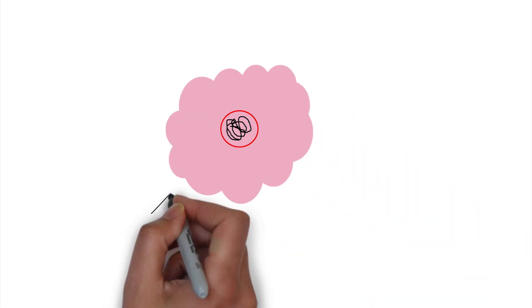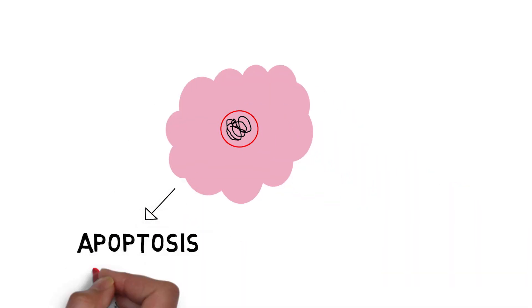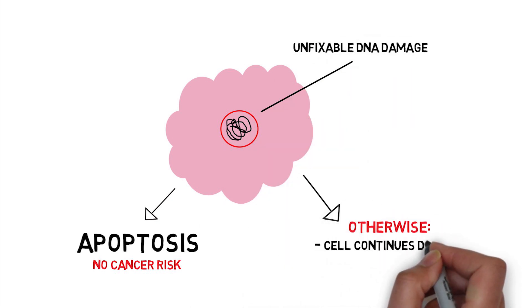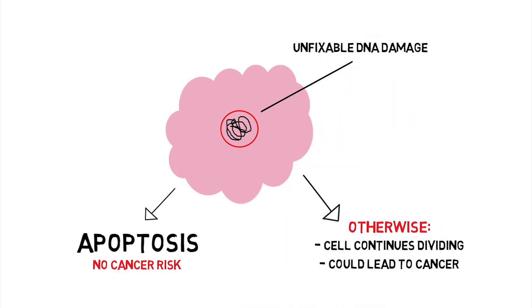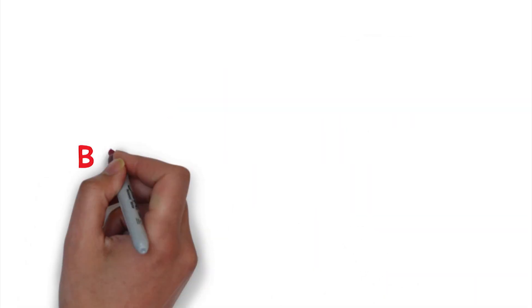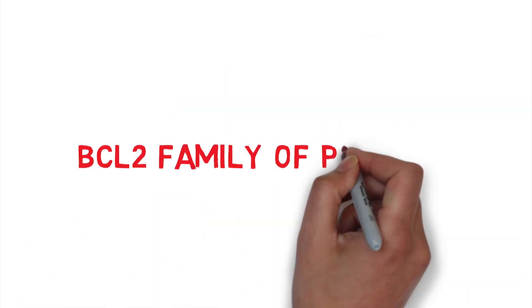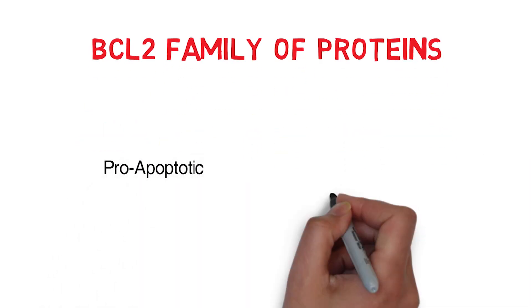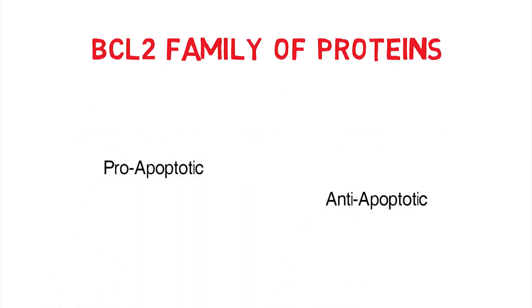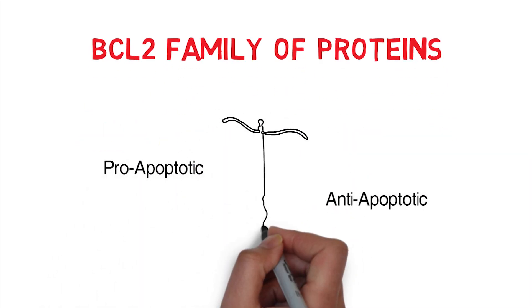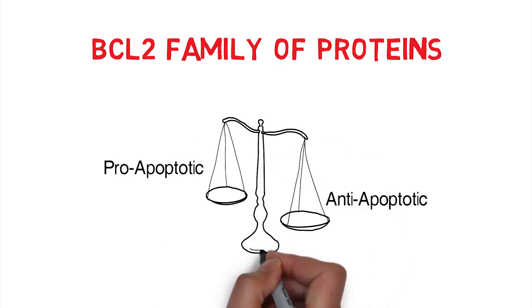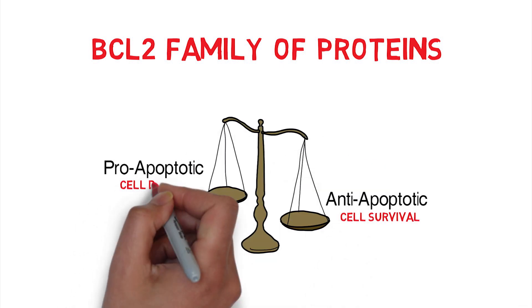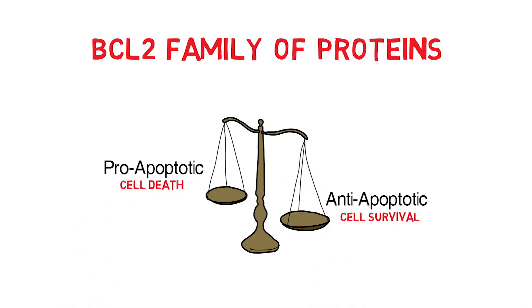Apoptosis, or programmed cell death, helps in destroying the damaged and diseased cells. The BCL2 family of proteins, which contain both pro-apoptotic and anti-apoptotic proteins, regulate this intricate balance between cell survival and cell death.